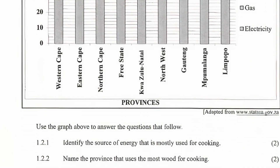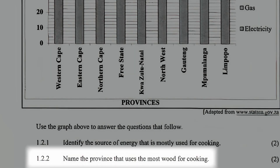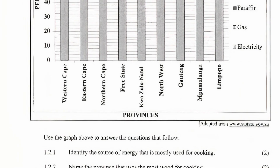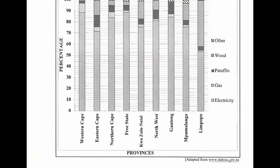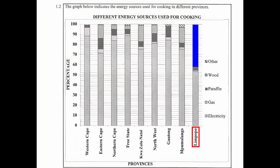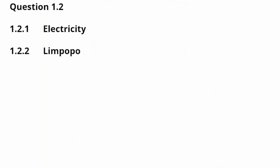Moving on to question 1.2.2, which asks us to name the province that uses the most wood for cooking. From the graph, we identify Limpopo as the province that uses the most wood for cooking. So the answer is Limpopo.